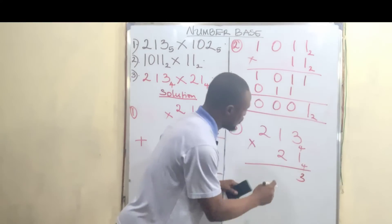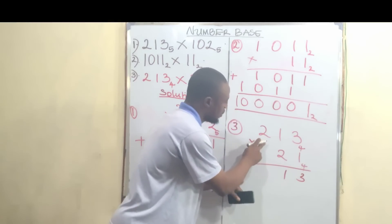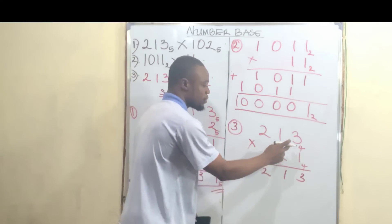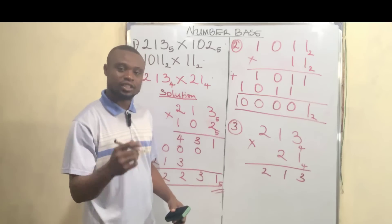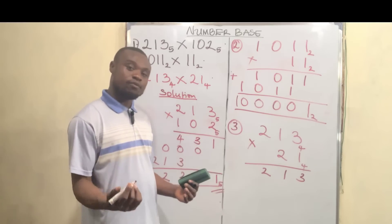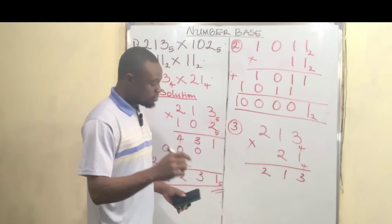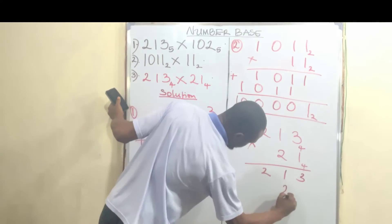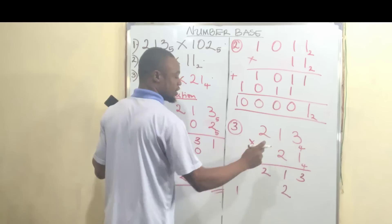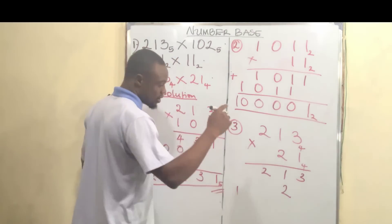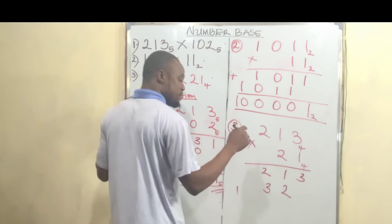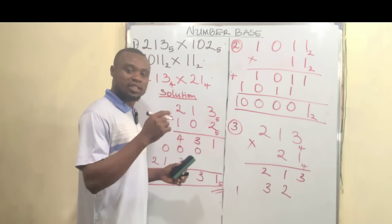1 multiplied by 3 is 3, 1 multiplied by 1 is 1, 1 multiplied by 2 is 2. Now 2 multiplied by 3 is 6 — there's no 6 in base 4, so 6 divided by 4 is 1 remainder 2. Write 2 and carry 1. Then 2 multiplied by 1 is 2, plus the carried 1 is 3. Now 2 multiplied by 2 is 4; 4 in base 4 is 1 remainder 0, so write 0 and carry 1.